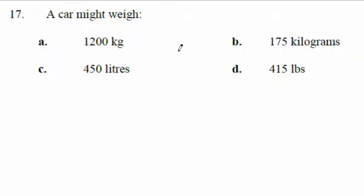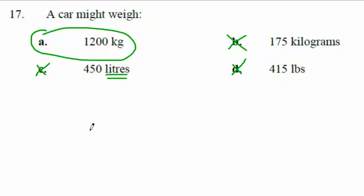Does a car weigh 415 pounds? That's like two or three people — no. 175 kilograms is about two people — no. 450 liters? Liters is volume, not weight — that's a dumb answer. So by elimination the answer is 1,200 kilograms, about 2,500 pounds, roughly a ton and a bit. You didn't need to do any math — just eliminate the dumb answers and the only one that works is left.